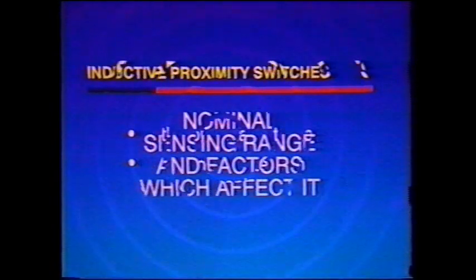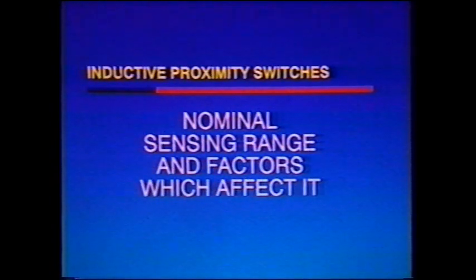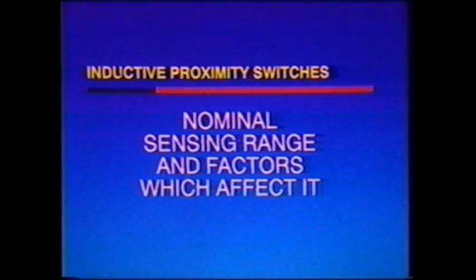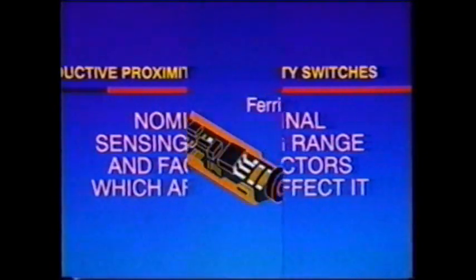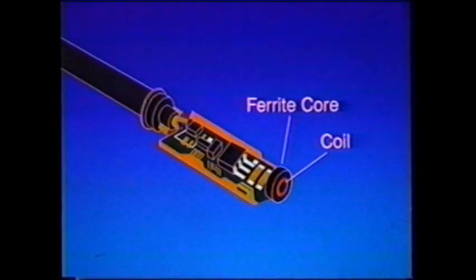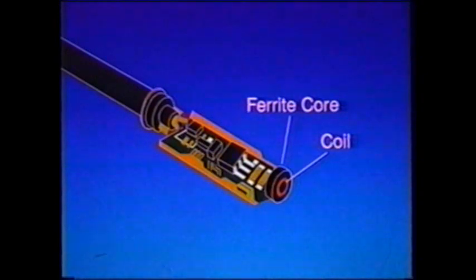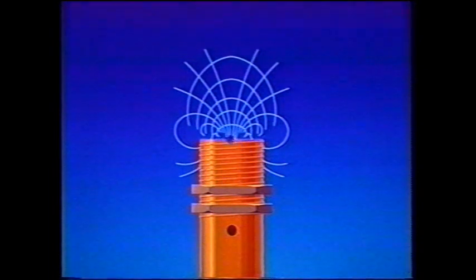Now we're going to look at inductive switches and what you should be aware of when applying them. First is the specified sensing range and the factors that affect it. An inductive proximity switch contains a coil and a ferrite core. Together, these two components form the inductive portion of an LC-tuned circuit, which drives an oscillator. This coil and core set up a very low energy electromagnetic field, which is radiated from the active face of the switch.